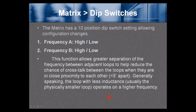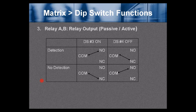The Matrix has a 10-position dip switch allowing configuration changes. DIP switch 1: Frequency A — high or low. DIP switch 2: Frequency B — high or low. This function allows greater separation of frequency between adjacent loops to help reduce crosstalk when they are in close proximity, less than five feet apart. Generally, the loop with less inductance operates on a higher frequency.